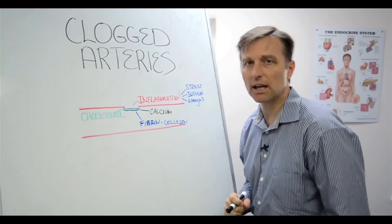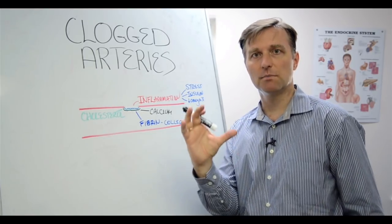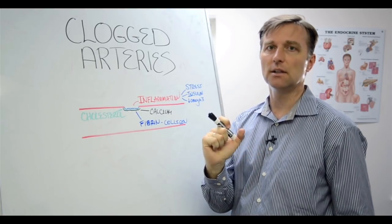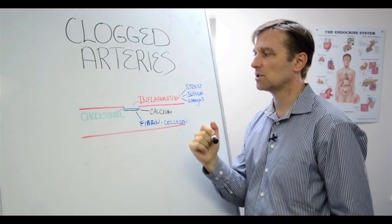Now, in a vein, you don't get clogged arteries because you don't have those muscle contractions. Veins are a bit more passive. They don't have that contractile muscle tissue. So you don't have that situation. It's only in arteries.